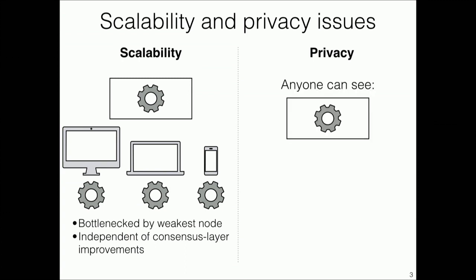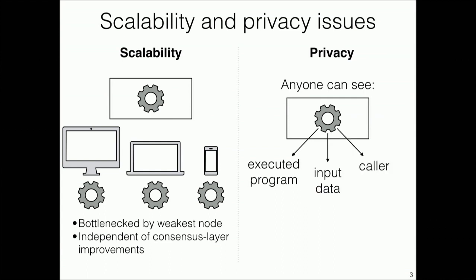From the privacy perspective, the transaction reveals what program was executed, what data was input to the program, and who invoked the smart contract. Anyone can see this for all time because the transaction is stored permanently on the ledger. In this talk, I'll show you how to fix these issues, focusing mainly on privacy, since there's been a lot of work trying to fix scalability.